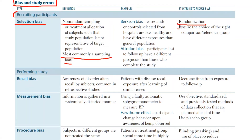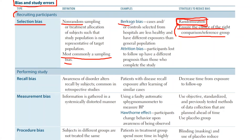You can also ensure the choice of the right comparison reference group and make sure that the sample is representative of the population. The major thing to remember is that randomization really helps eliminate this bias. They talk about two examples: one is called Berkson's bias, and one is called attrition bias.